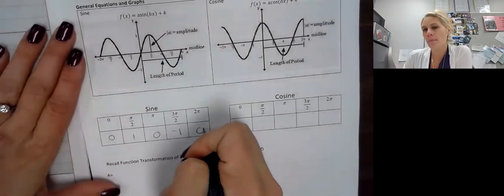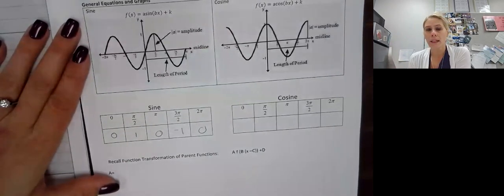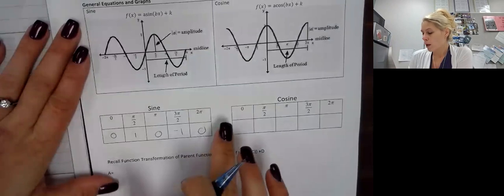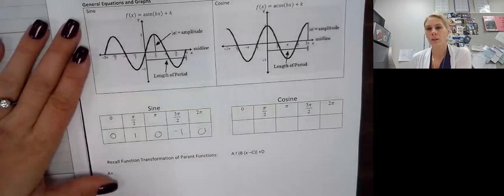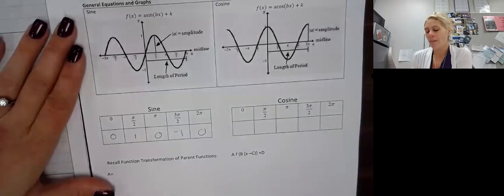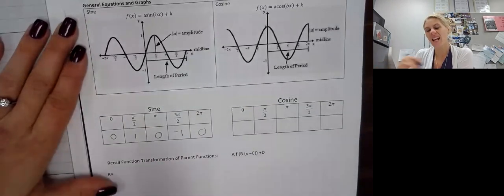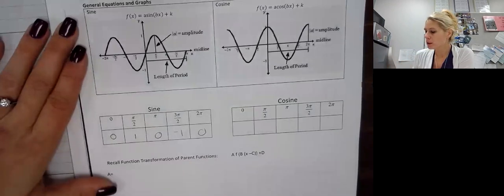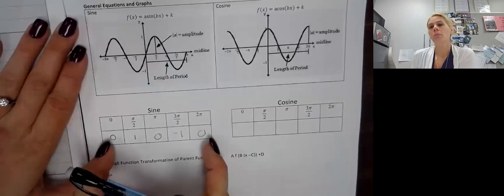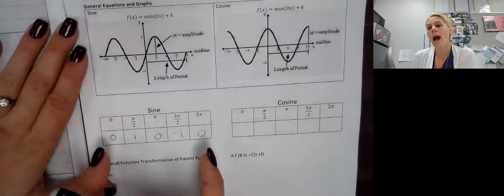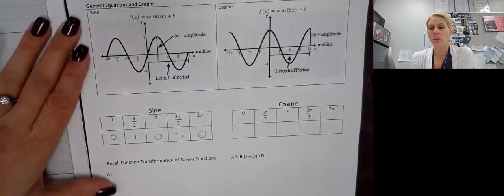And what happens if we keep going around and around in the circle? This keeps repeating: zero, one, zero, negative one, zero, one, and so on. So what happens is the graph then repeats and it becomes a wave. A single period is where our graph does a full rotation, like on the unit circle, and then it starts to repeat.